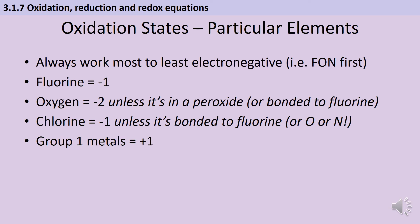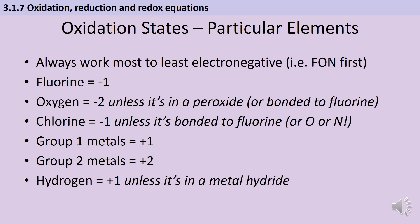Group one metals are always going to be plus one, and group two metals are always going to be plus two — note it's plus one and plus two, not written like charges on ions as two plus. And lastly we've got hydrogen, which is always going to be plus one like the group one metals, unless it's in something called a metal hydride. In the same way that chlorine will be minus one unless it's bonded to something more electronegative, hydrogen is going to be plus one unless it's reacted with, say, sodium — because then sodium from group one is going to be plus one, and the overall compound has no charge, so therefore the hydrogen must be minus one.